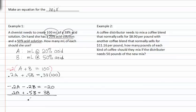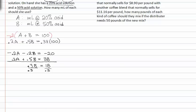To get 0.3B is equal to 18. If I divide both sides by 0.3, I get B is equal to 60. If B is equal to 60, we know A plus B is equal to 100. And so A plus 60 is equal to 100, so A is equal to 40.